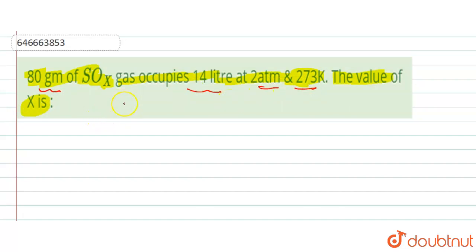We want to know this x value. Here we are given the mass, that is 80 grams. If we write the molar mass for this, the molar mass will be 32 (for sulfur) plus 16 times x.